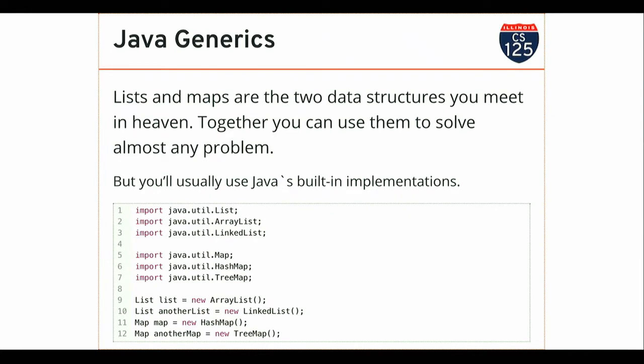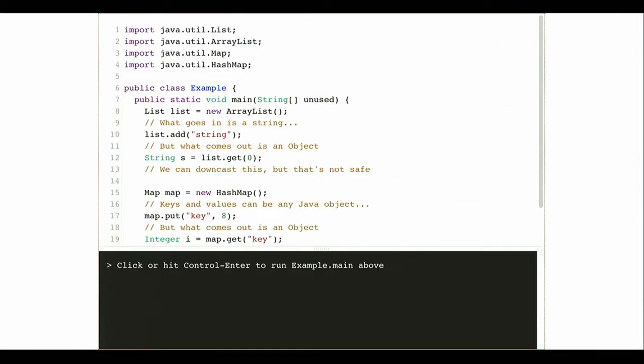We showed you how to implement those and talked about how to implement maps when we talked about hashing. But normally you're going to use Java's built-in implementations. What we've seen when using these is that they are examples of both generic classes and generic interfaces, both of which we're going to talk about. The reason for this is because it allows us to achieve type safety.